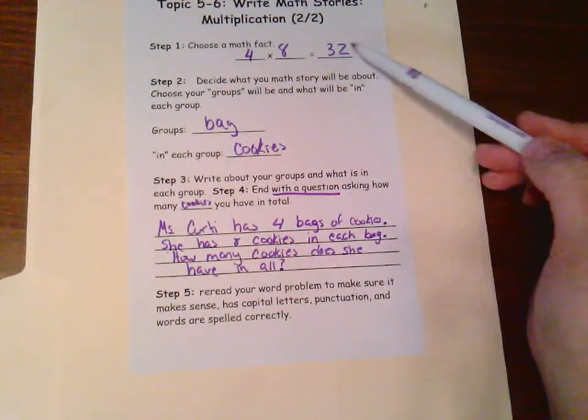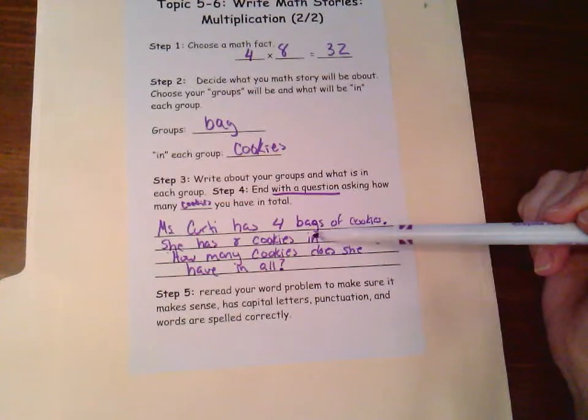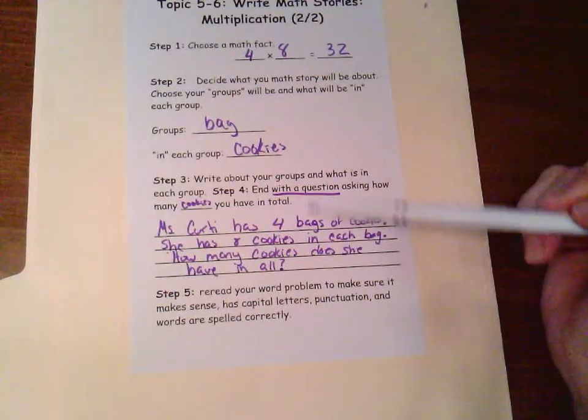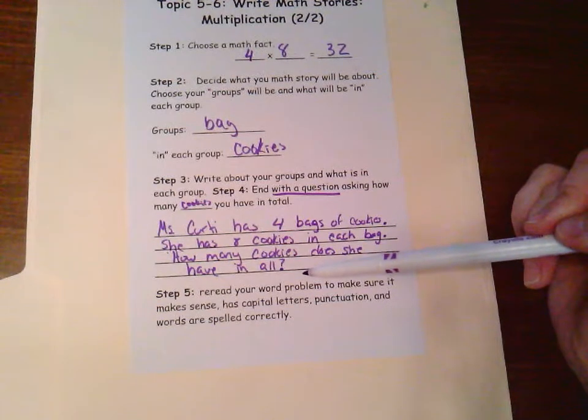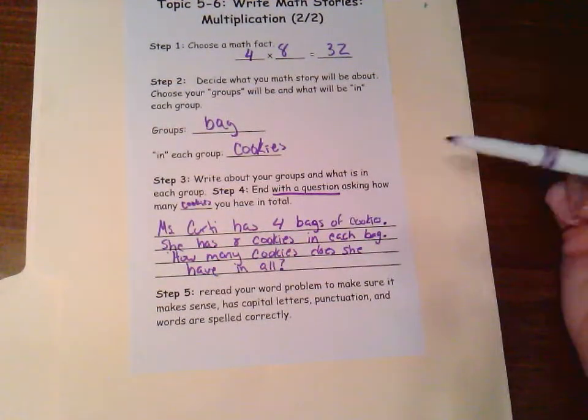Notice that we haven't actually given our answer because that is what the other person who's going to read your word problem needs to do. So although we know what it is, we're not going to tell them there's 32 cookies. We're going to ask them to find that piece of information.